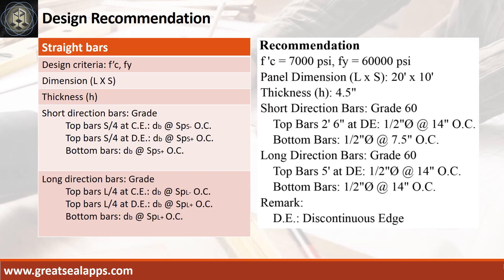Design recommendation: f'c equals 7,000 PSI, fy equals 60,000 PSI, panel dimension is 20 feet by 10 feet, thickness is 4.5 inches. Short direction bars of grade 60 — top bars at discontinuous edge, 2 feet 6 inches, 1/2-inch diameter bar at 14 inches on center; bottom bars, 1/2-inch diameter bar at 7.5 inches on center. Long direction bars of grade 60 — top bars at discontinuous edge, 5 feet, 1/2-inch diameter bar at 14 inches on center; bottom bars, 1/2-inch diameter bar at 14 inches on center.